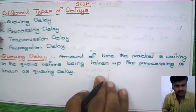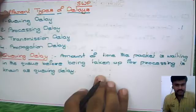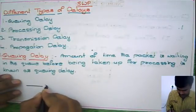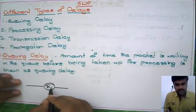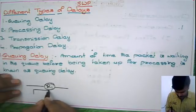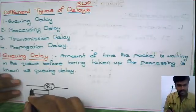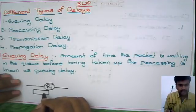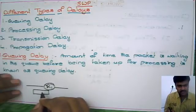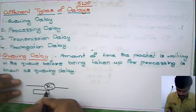Let us see the first one: queuing delay. As the name implies, this is about a queue. In the queue, how much time is a packet going to wait before being processed? Assume this is router R1. This router has some buffer. Whatever packets come in, if the router is processing some other packet, the incoming packets must stay in this buffer.